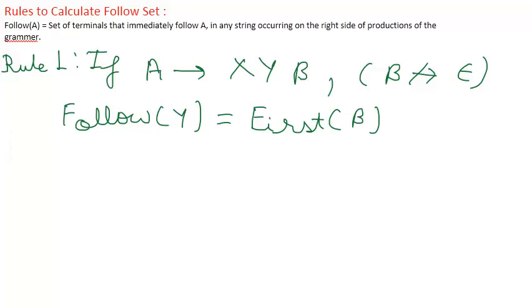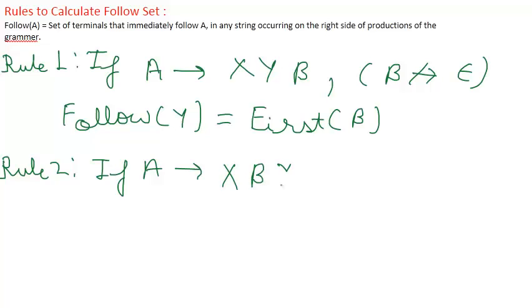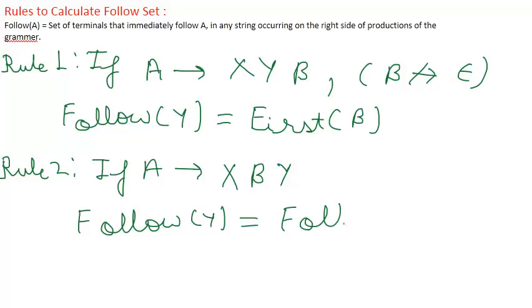Rule number two: if A derives any string of the form X β Y and we want to calculate Follow(Y), then according to rule two, Follow(Y) = Follow(A).